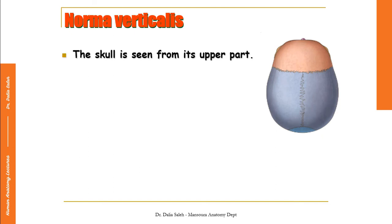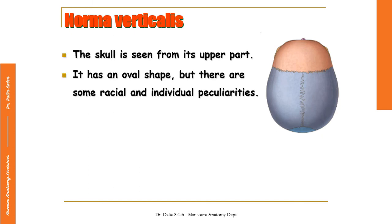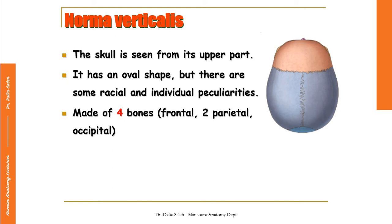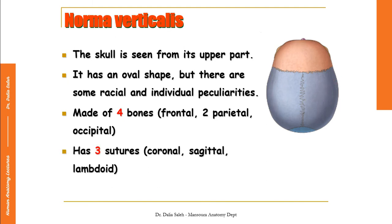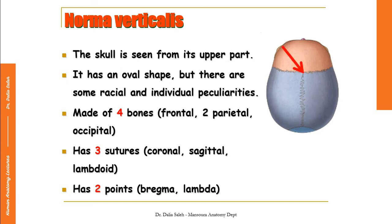In the norma verticalis, the skull still has an oval shape, but its exact shape differs from one race to another and from one individual to another. It is made of four bones: two parietal bones, the frontal bone, and the occipital bone. In this view we can see three sutures — the coronal suture, the sagittal suture, and the lambdoid suture — and two meeting points: the bregma at the anterior end of the sagittal suture and the lambda at its posterior end.